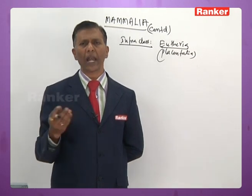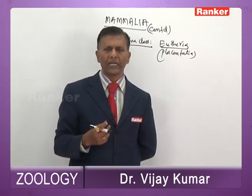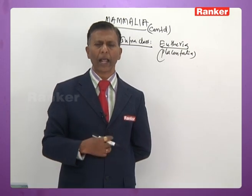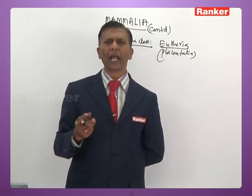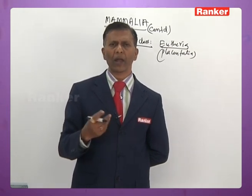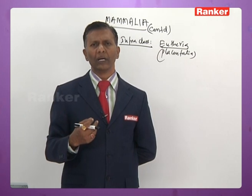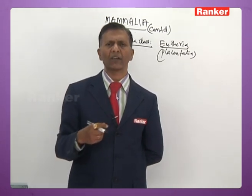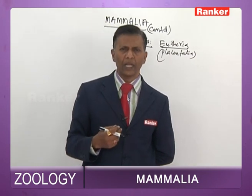Ribs are double-headed. Teeth are thecodont, diphyodont, and heterodont in most. Vertebrae are with epiphysis and are amphiplatyan. Cochlea is highly coiled. They have external, middle, and internal ear — middle ear has three ear ossicles (MIS: malleus, incus, stapes). Fertilization is internal, taking place in the fallopian tube. Eggs are microlecithal or alecithal; cleavage is equal holoblastic. The embryo develops fetal membranes transforming into placenta — for example, hemochorial placenta in human beings. Due to the well-developed placenta, they are called placentals.